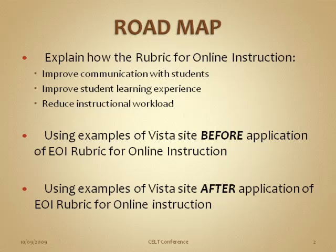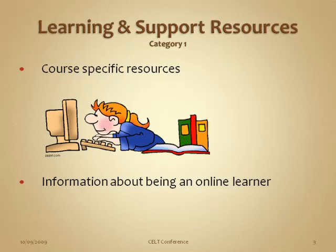The Rubric for Online Instruction is quite extensive, and my intent today is not to cover all of its points, but to highlight a few that I think will help facilitate student learning and reduce the instructor's workload. The first category in the rubric is Category 1: Learning Support Resources, and I'm going to talk about course-specific resources and information for being an online learner.